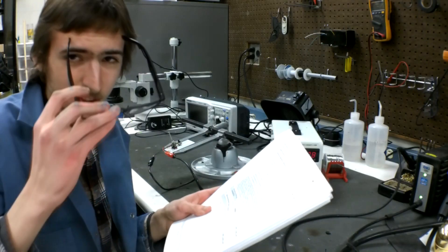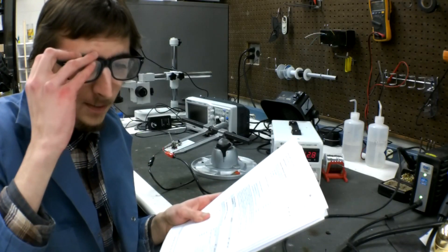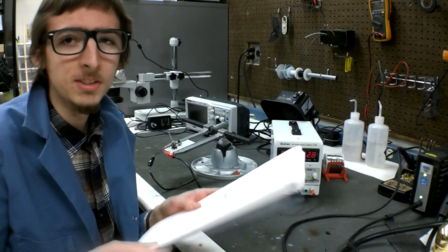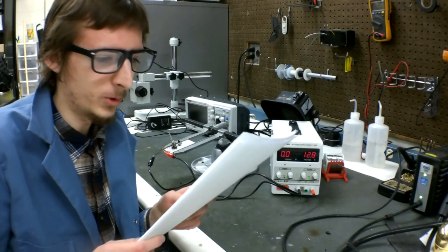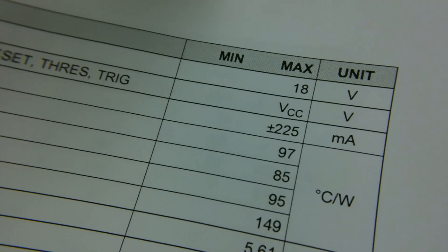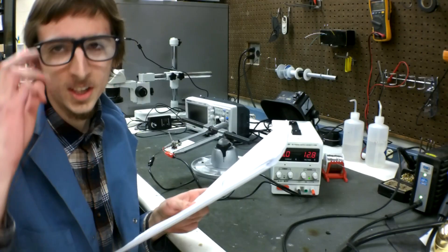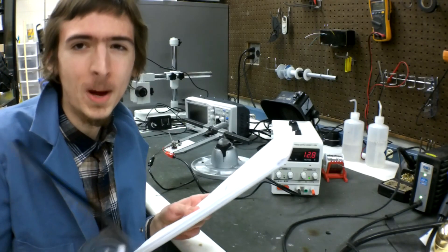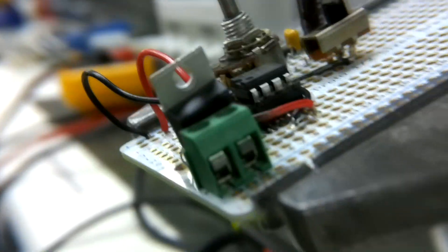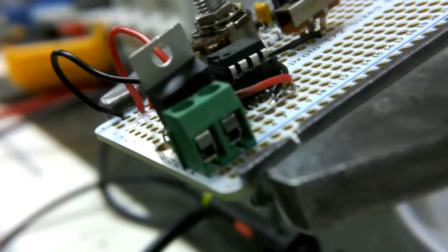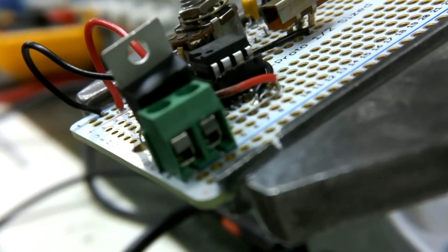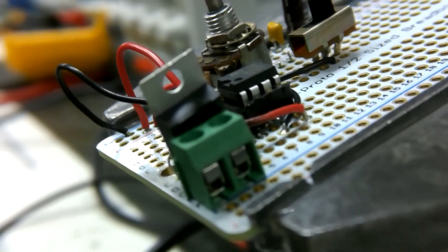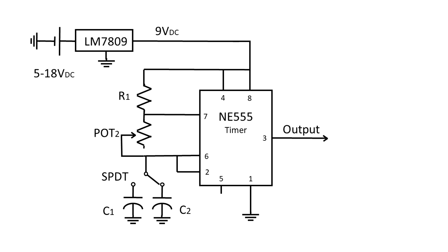If we take a look at the 555 datasheet, we see that the input voltage is anywhere between 5 and 18 volts — this is something that you should keep in mind. It's for this reason that I added a 9-volt linear voltage regulator into the input, as you can see here in the schematic.